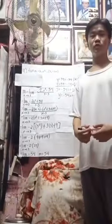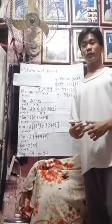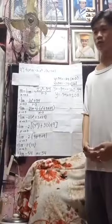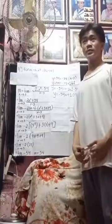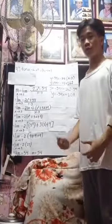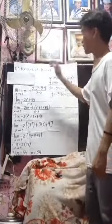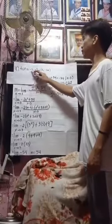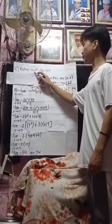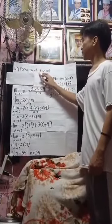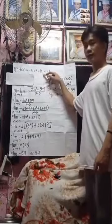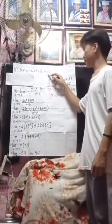Good afternoon Sir Rogan, good afternoon everyone. My name is Mark J. Mirano and I was assigned to present number 4, with a given of f of x is equal to negative 2x cubed at the point of 3 comma negative 54.